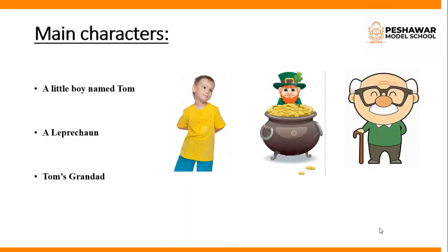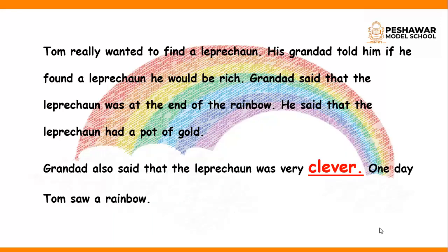Tom and the Leprechaun is a story in which there are three main characters, as you can see in the picture. The first character is a little boy whose name is Tom. The second character is a small cross-shaped structure whose name is the leprechaun. The third character is Tom's granddad. As you can see in the picture, all three characters are present.